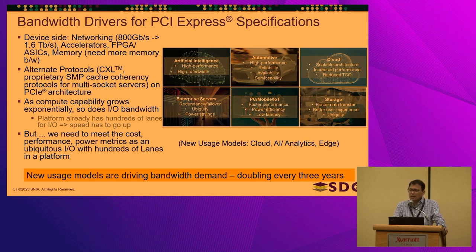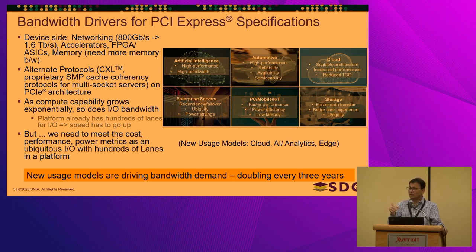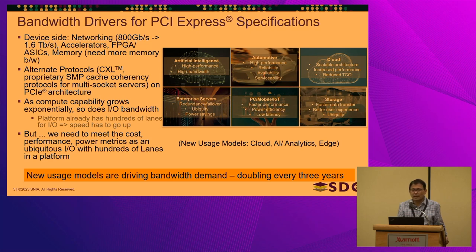The question is how does the evolution work? We are still cost constrained — it's not like a four-lane networking solution where you just ask for the highest speed. Cost, performance, and power are all king because PCIe is across all segments with hundreds of lanes. With a ubiquitous I/O, none of these will give up. It requires a lot of innovation, and the good thing is that we have volumes. With volumes you can bring the best innovation to be economically viable.